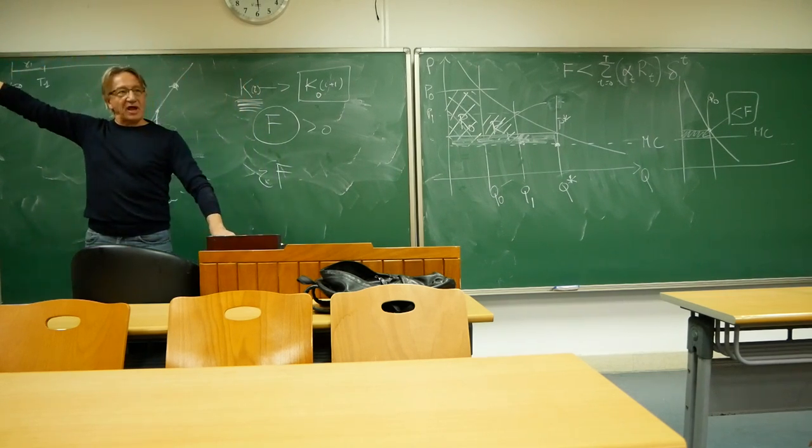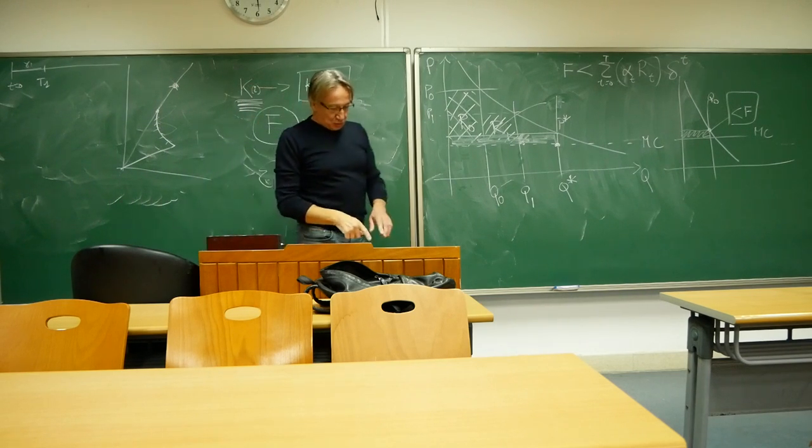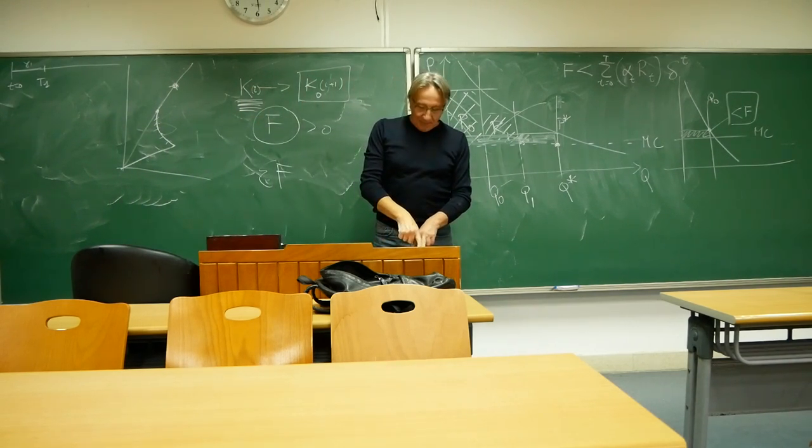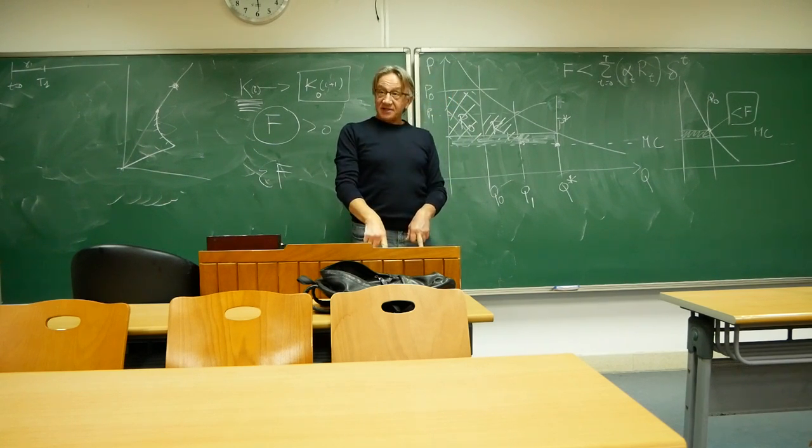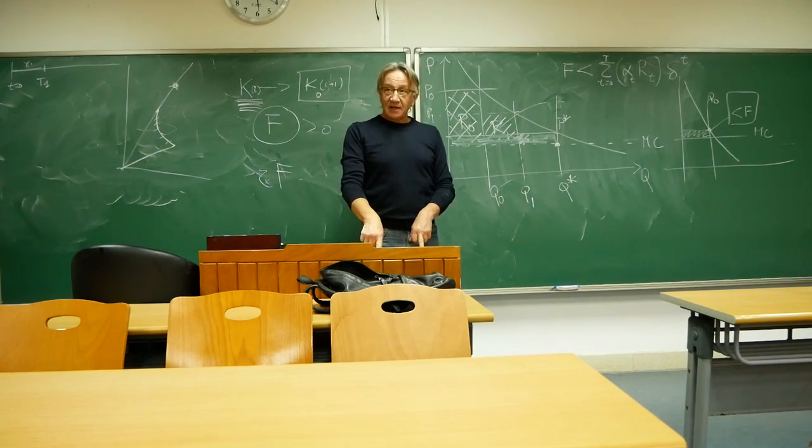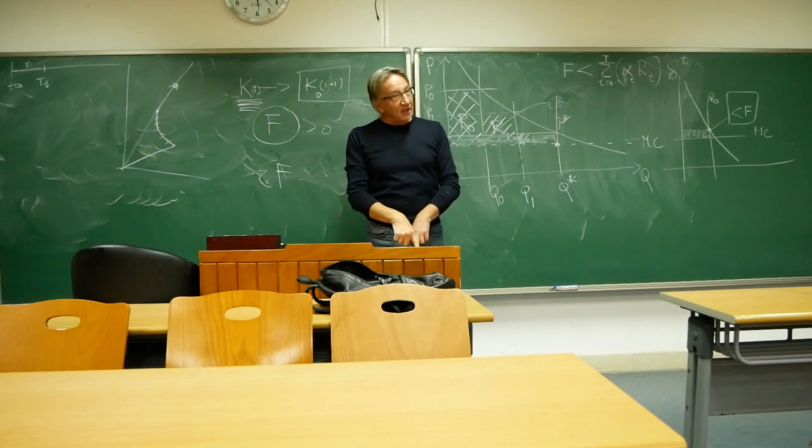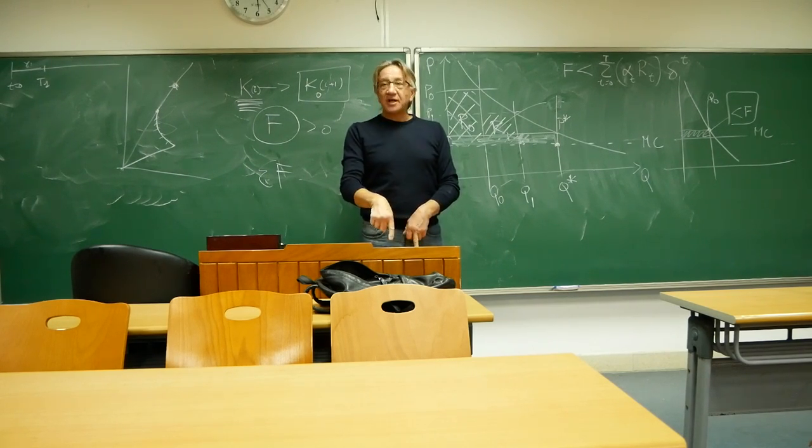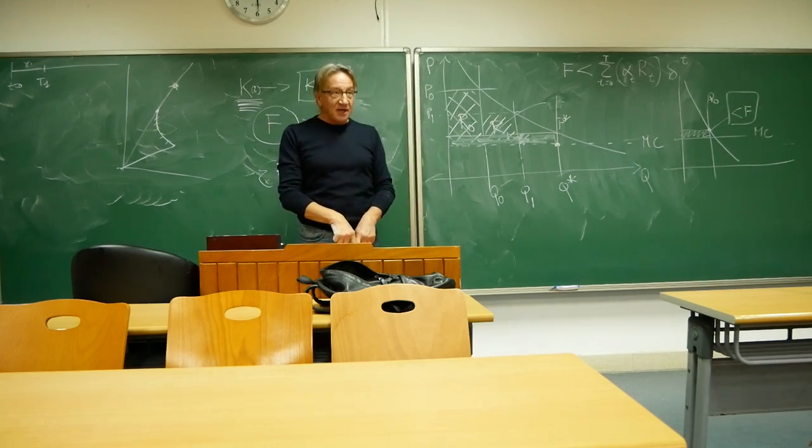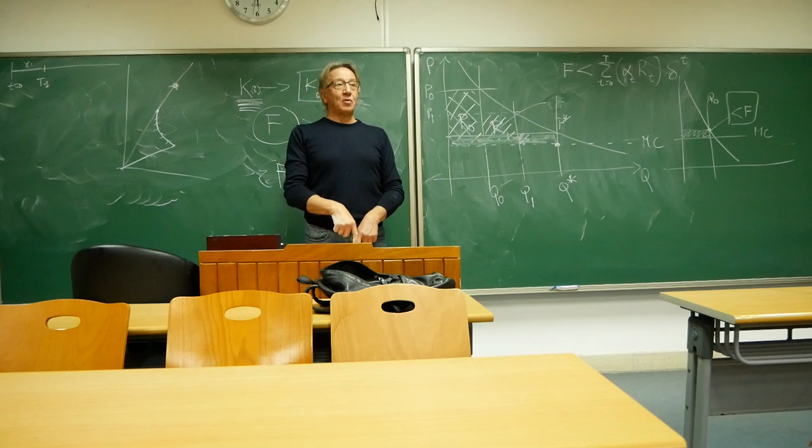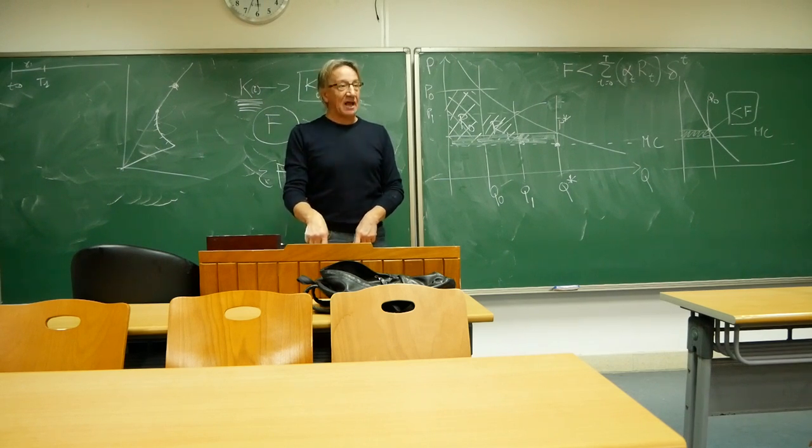I think that the amount of time that it took, say, to the US or to United Kingdom, to go from income 100 to income 1000 was X. The amount of time that it took China to go from income 100 to income 1000 was a lot less. Why? Because the US had to go through all this process.